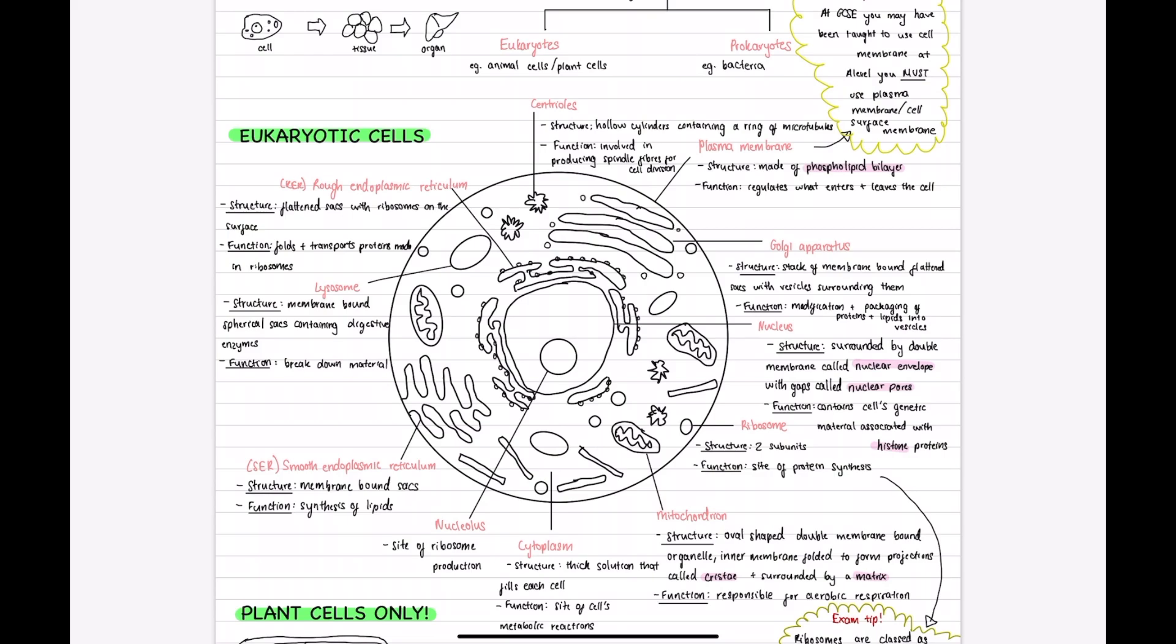The Golgi apparatus are the organelles which are a stack of membrane-bound flattened sacs which are arranged in the form of a lecture theatre and have vesicles surrounding them. Their function is to modify and package the proteins and lipids into vesicles which they receive from the smooth and rough endoplasmic reticulum.